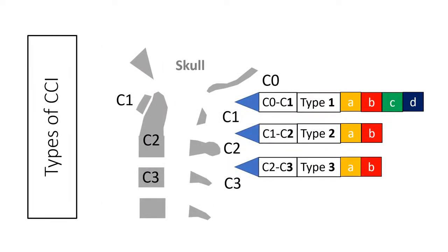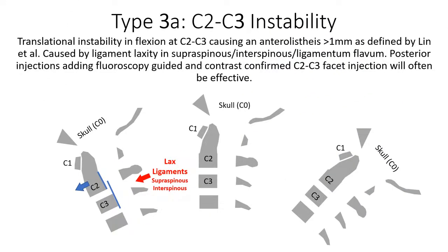We're talking about the typing system for CCI that I put together, and this is C2-3 instability — that's a type 3. A is flexion, and B is extension. So type 3A is going to be instability in flexion — that's when the C2 moves forward of the C3, and that's when you look down. The lax ligaments here are going to be in the back.